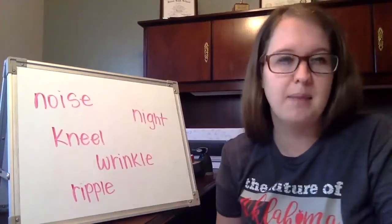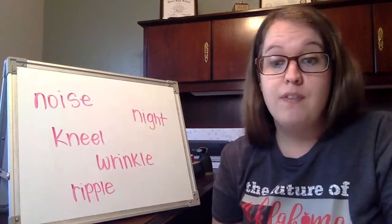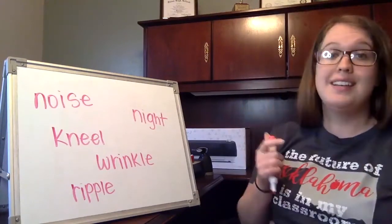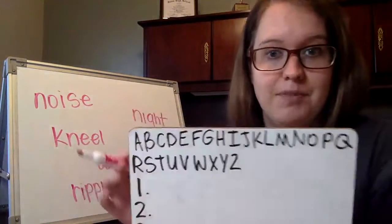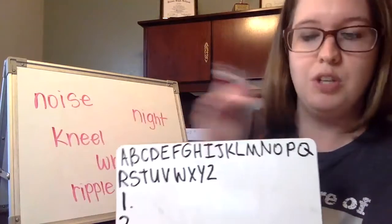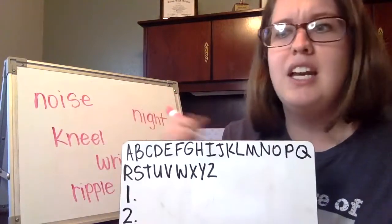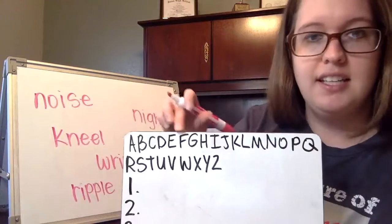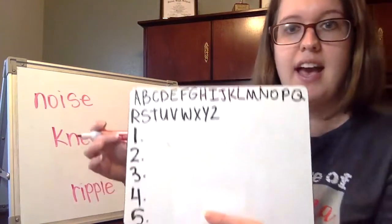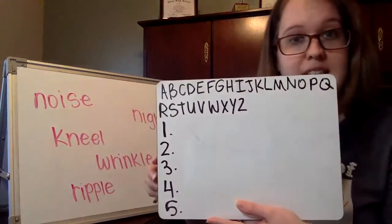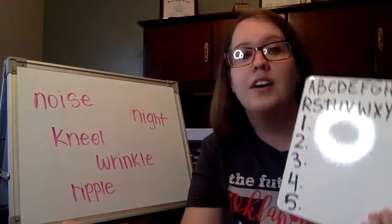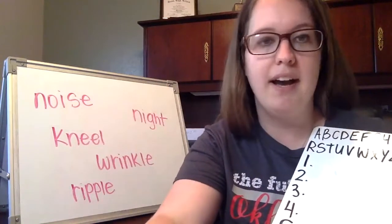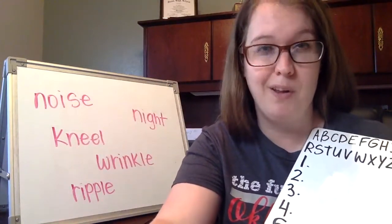Remember that hearing things more than once sometimes will help our brain understand it a little bit better. The very first step whenever we are putting things in ABC order is that we have to write our ABCs. I've done that across the top of my mini whiteboard — you can do this on a piece of paper, a napkin, any type of scrap paper. I have my ABCs and numbers one through five because I have five words. You're welcome to pause the video anytime if I'm going too fast.